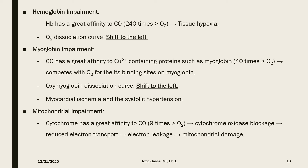When it comes to myoglobin impairment, carbon monoxide has a great affinity to copper-containing proteins such as myoglobin — 40 times more than oxygen. Therefore it competes with oxygen for the binding sites on myoglobin, leading to a shift to the left of the oxymyoglobin dissociation curve. This leads to myocardial ischemia and systolic hypertension associated with carbon monoxide poisoning.